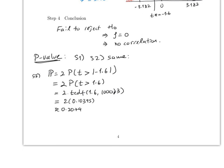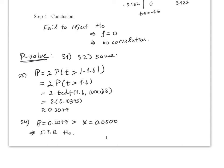For step four, compare the p-value 0.2079 with α = 0.05. Since 0.2079 > 0.05, the conclusion is the same: fail to reject H₀.